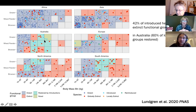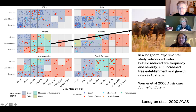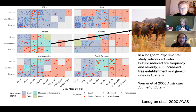Introductions have also introduced a novel functional group — Australia never really had big grazers, unlike most other continents. These animals have really interesting effects that have very rarely been studied in the context of Earth's history, and they're usually studied only in the context of how the world was first described by Europeans. Werner et al. in 2006 did a fantastic study — one of the few really high quality studies on introduced herbivores — setting up long-term experimental plots in Northern Australia in the monsoon tropics, and found that grazing by water buffalo reduced fire frequency and severity and increased tree establishment and growth rates.